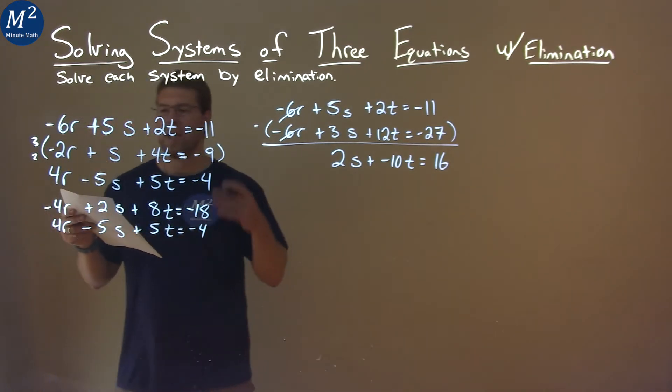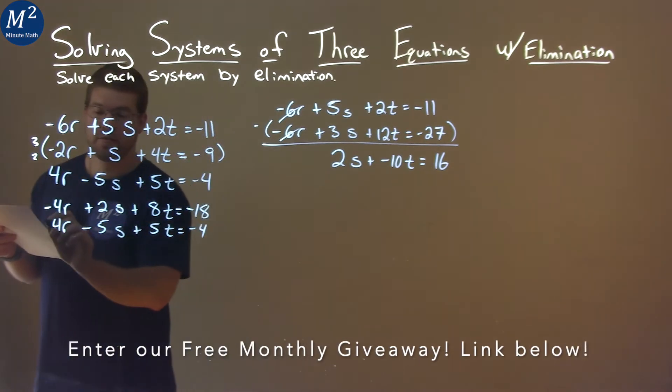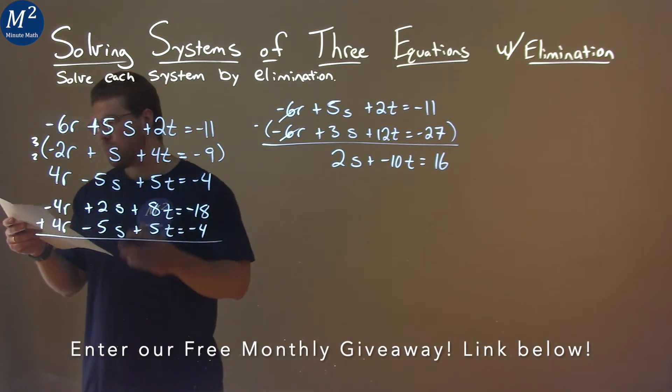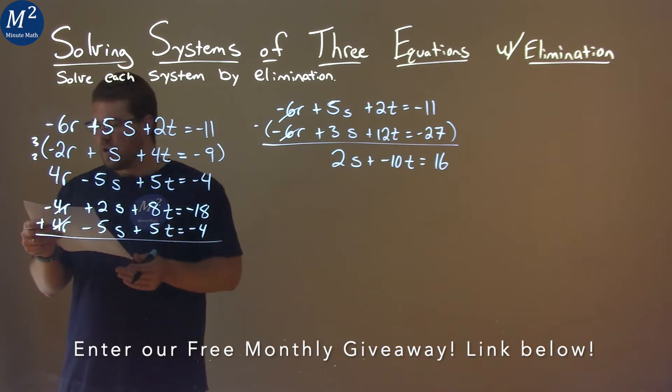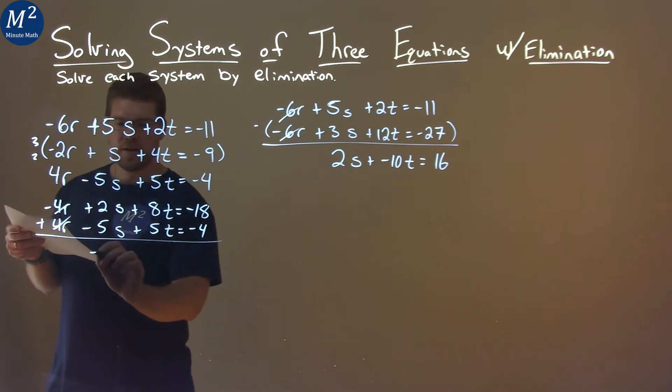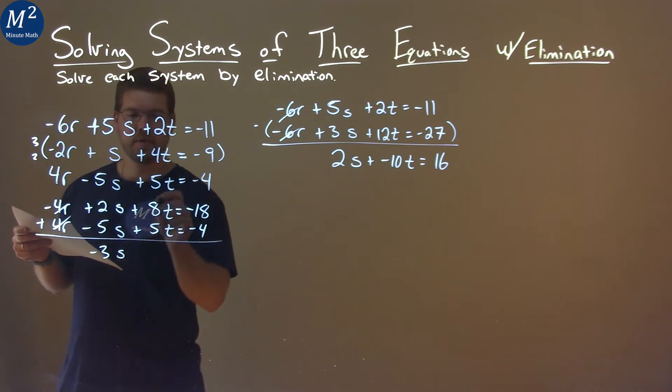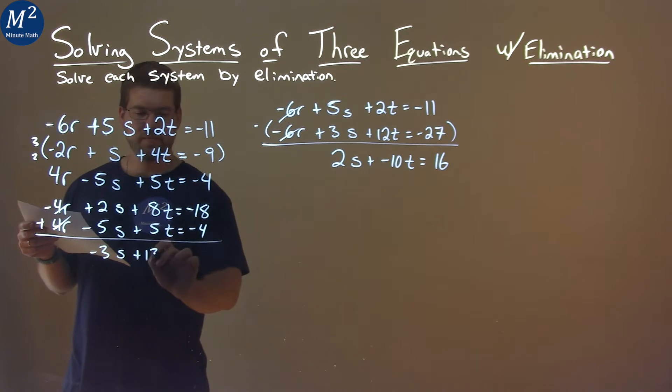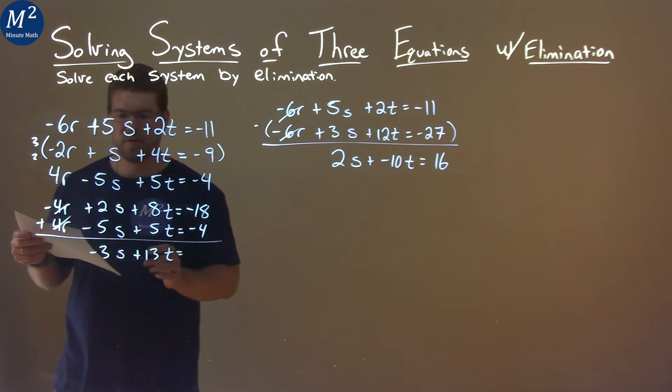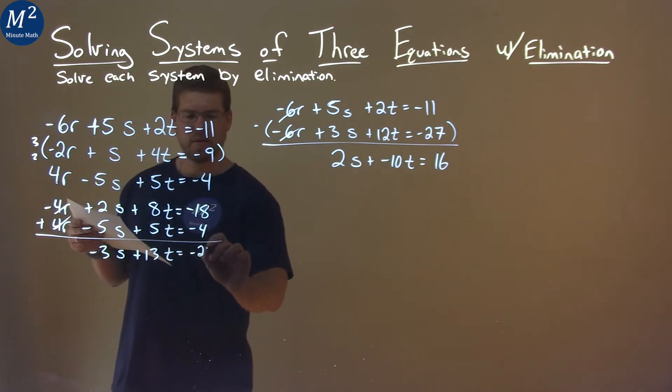And look, we have it set up now where our r's will cancel. We add the two equations: negative 4r plus 4r is just 0r, it cancels out. 2s plus negative 5s is negative 3s, and 8t plus 5t is 13t. Negative 18 plus negative 4 is negative 22.